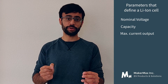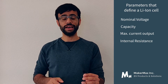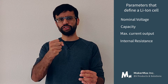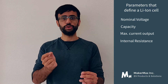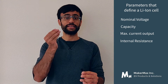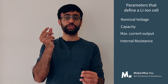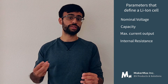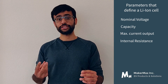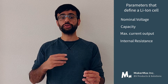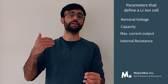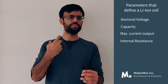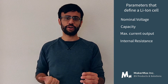That brings us to the next parameter: internal resistance. This is a very important parameter where we club all the different construction, chemistry, and other factors into a single value, typically termed in datasheets as DC internal resistance, specified in milliohms. For lithium-ion cells, you'll mostly find it expressed in milliohms. This value tells you how much current you can draw instantaneously, how much heat builds up inside the cell, and how to model the cell during charge and discharge.